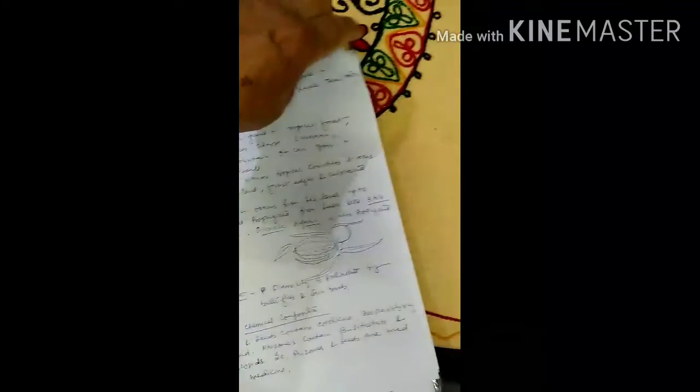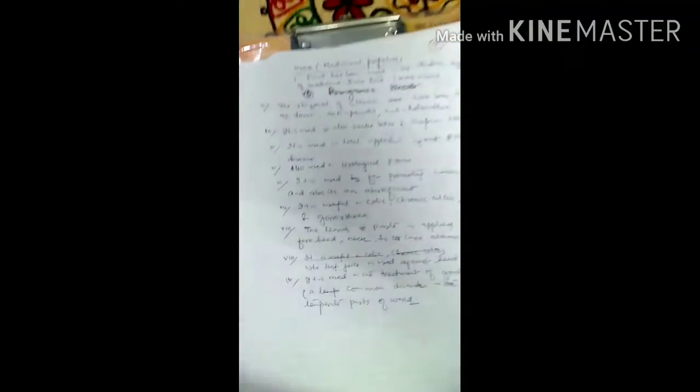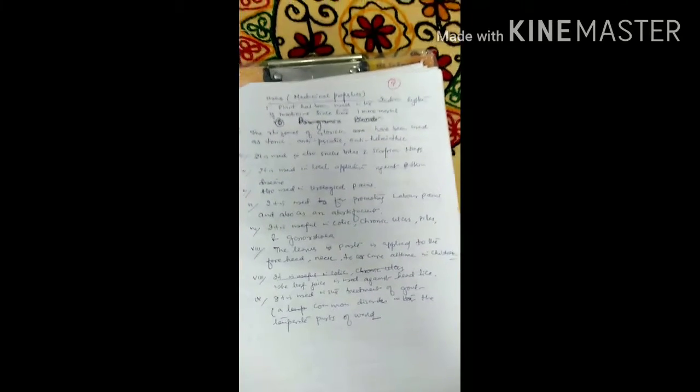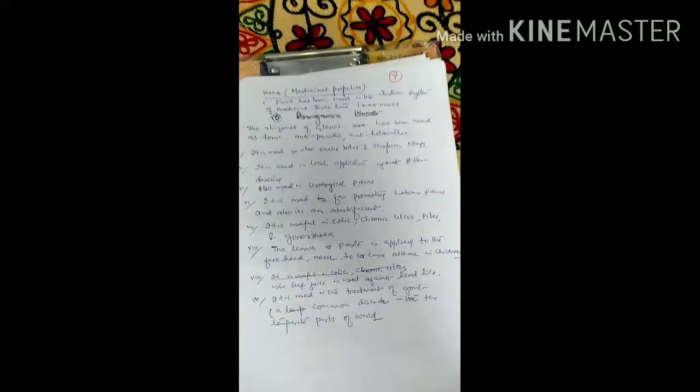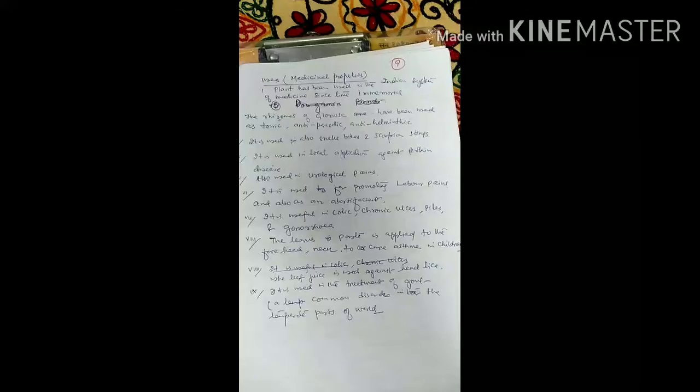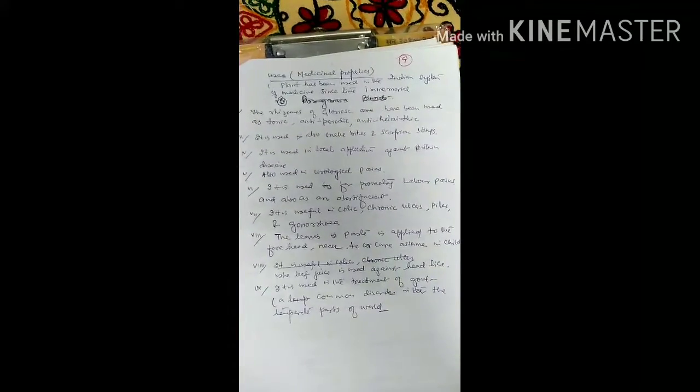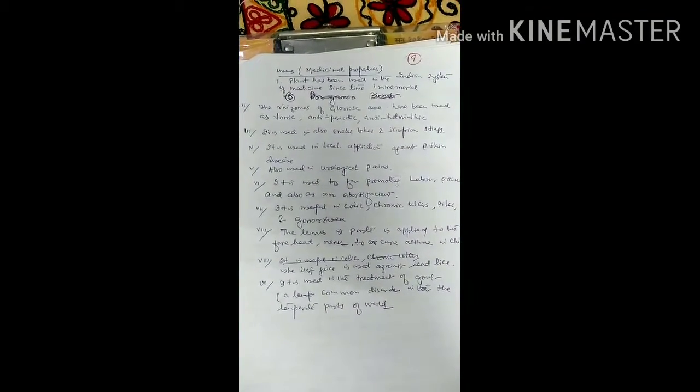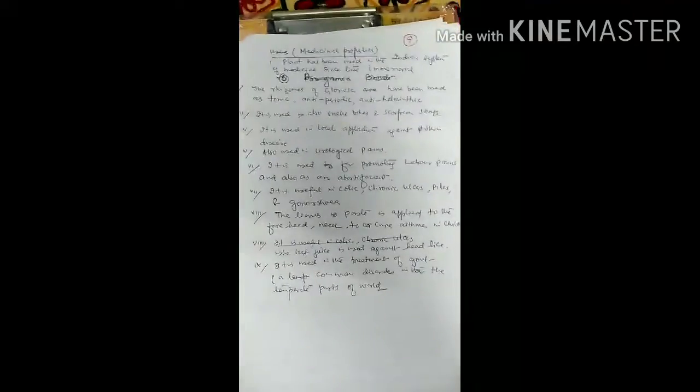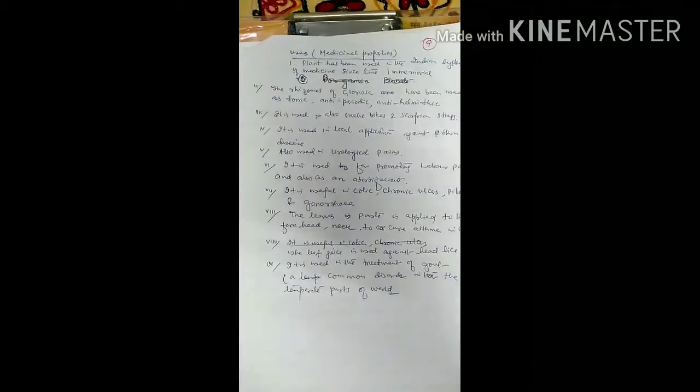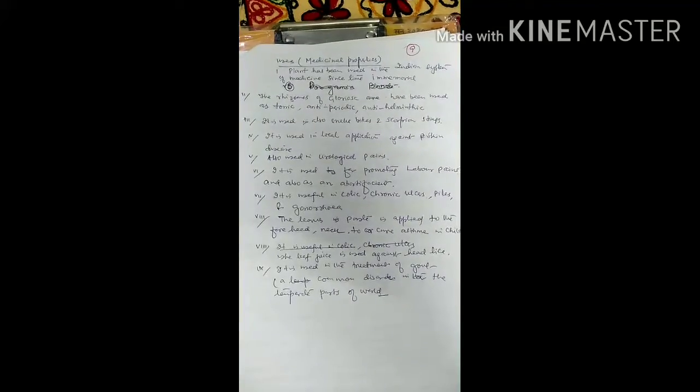Chemical compositions are given here in medicinal use. The plants are used in Indian medicinal institutions since time immemorial. The rhizome of Gloriosa has been used as tonic, anti-periodic, anti-helminthic. It is used also as snake bite and scorpion sting. It is used in local application against skin disease. Also used in urological pains.